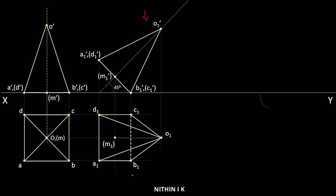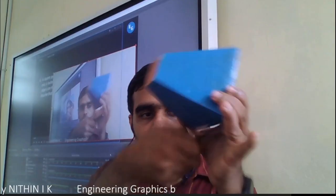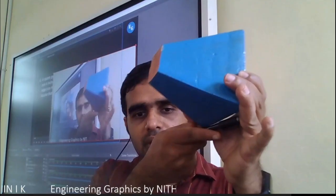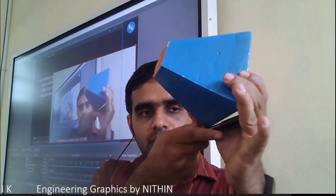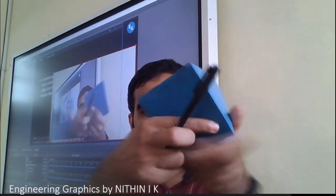The apex is away from VP and is on the right side. We need to determine the correct position. The apex is on the right side. The 60-degree line is positioned here. Edge CB is on the right side, away from VP.